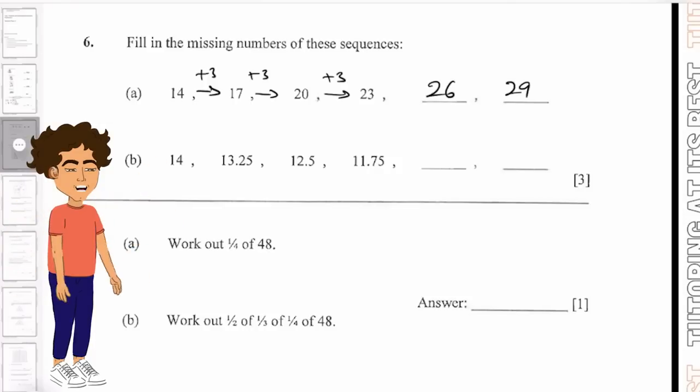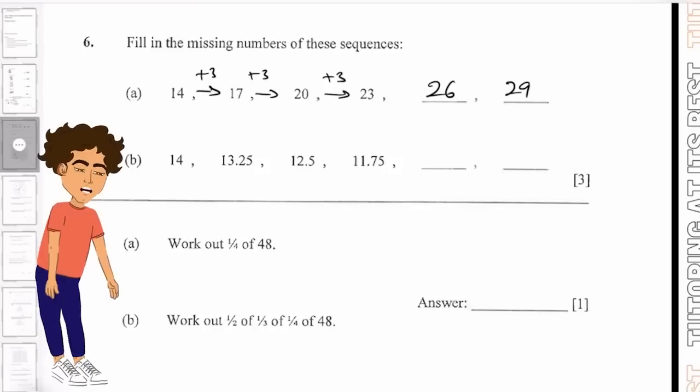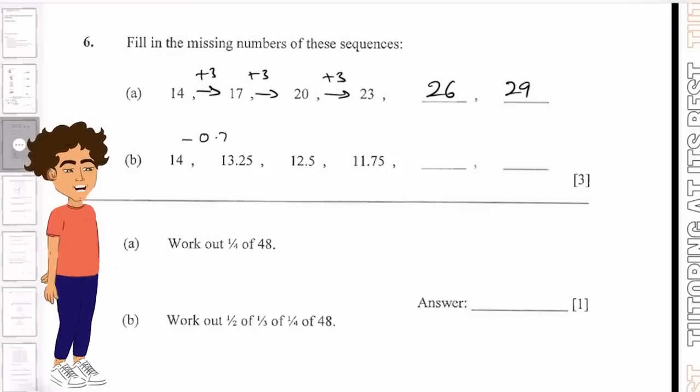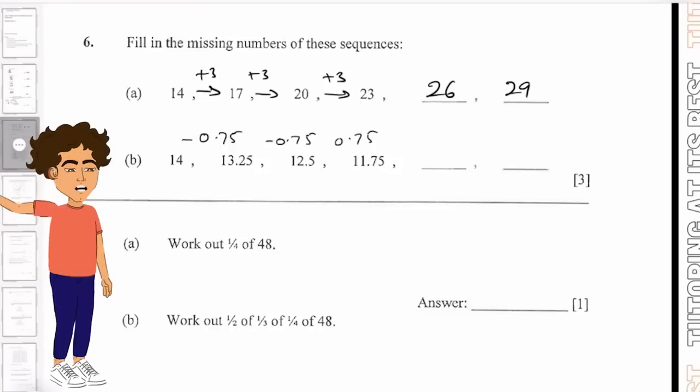And then for the second question, we can see that it's going to be a minus 0.75 for each section here. We have 11.75 take away 0.75, which gives us 11.